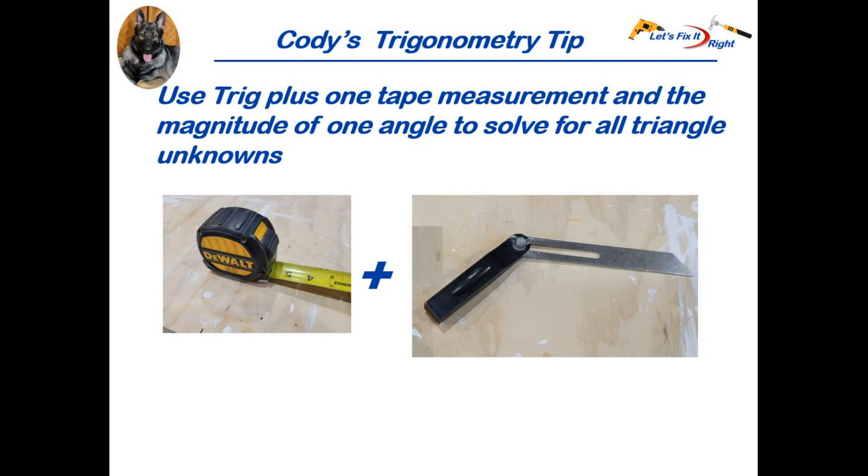However per Cody's tips if you use simple trig you only need to measure the length of one of these three sides with your tape measure and capture one angle of the triangle with the carpenter's angle measuring tool to solve for the lengths of the other two sides of the triangle. Consequently let's start with some basic trig concepts now.